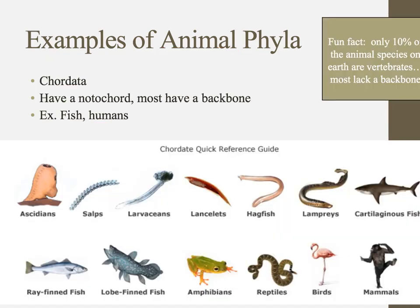Finally, we have the chordates. Chordates are things like fish or humans. They have a notochord — kind of like a spinal cord — and most have a backbone or vertebral column around it, so we often call these the vertebrates. But you need to know them as chordata. All arthropods are invertebrates; the only phylum that includes vertebrates is chordata.